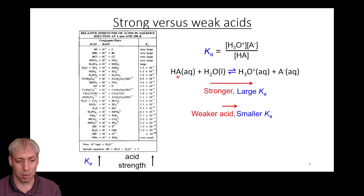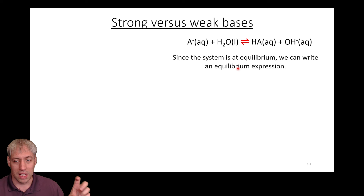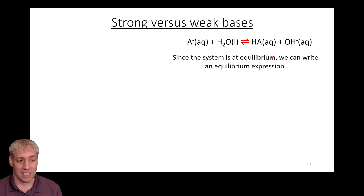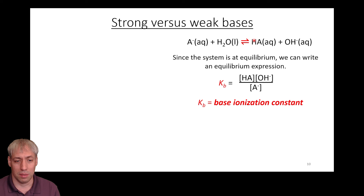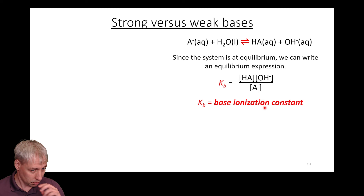We can talk about the same thing with bases. Beyond the six strong bases, everything else has some kind of equilibrium condition: A- + H2O giving HA and OH-. There's the base, there's the conjugate acid. That equilibrium tells us how strong a base it is — how much does this A- want to steal a proton from solution? We describe that with another equilibrium constant Kb, the base ionization constant. H2O is a liquid so it doesn't appear in the expression. Kb tells us how willing the base is to steal protons from aqueous solution.